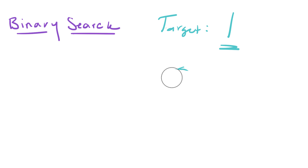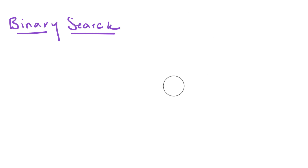Say you're in a situation where you have 50 elements in an array and you need to find a number at, for example, the 36th or 48th index. You'd have to iterate through each element in the array until you reach the desired one, which is rather inefficient. That's where binary search comes in.